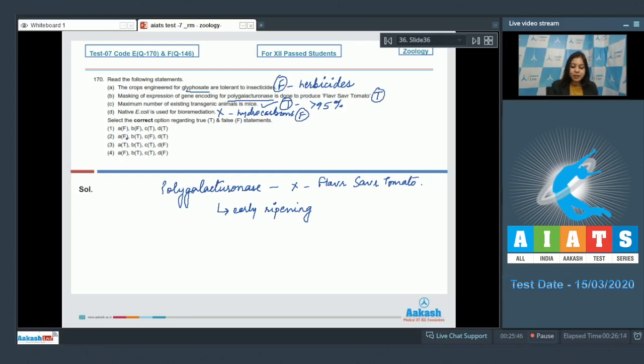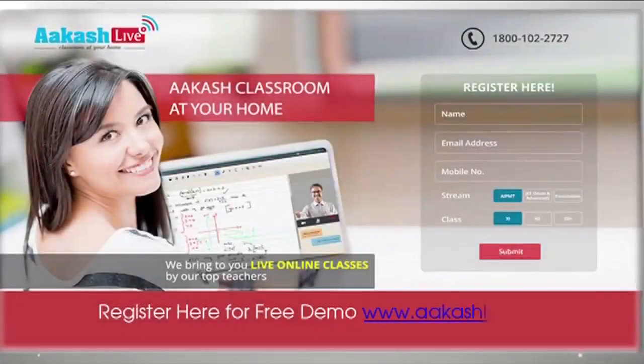Let us see the options. We have to find a combination of F, T, T, F. So here we find F, T, T, F in option number four. So the correct answer becomes option number four. Thank you.